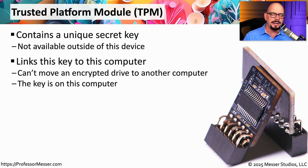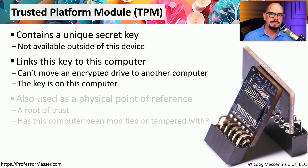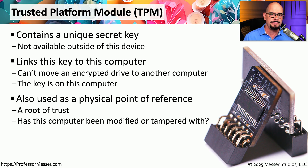Your encryption keys are associated with your individual computer, and we can use those keys to perform different functions. For example, if you've enabled BitLocker or some other type of full disk encryption, you can use these keys to protect the data stored on that device. This also means you can't take the storage device out of your computer and move it to another computer to gain access — you would still need to decrypt the data, and the decryption key is inside the TPM on the original computer.